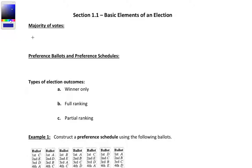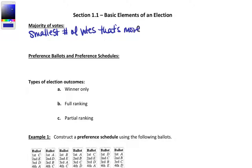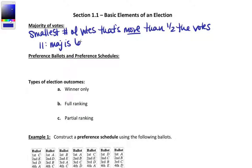We're going to begin with some basic terminology. First: the majority of votes. That is the smallest number of votes that's strictly more than half the votes. For instance, if you have 11 votes, the majority is going to be 6, because half of 11 is 5.5, and the smallest number bigger than that is 6. If you have 10 votes, half of 10 is 5, but majority has to be bigger than half, so we get 6.